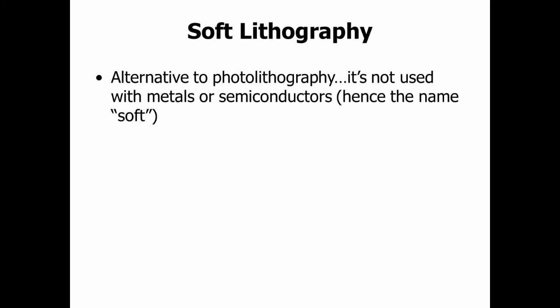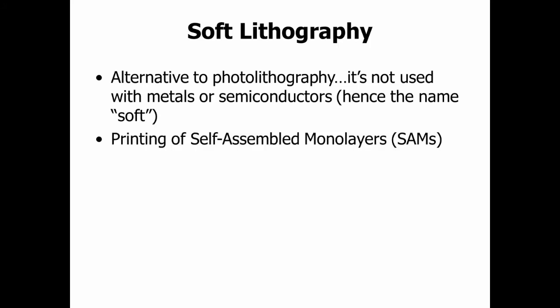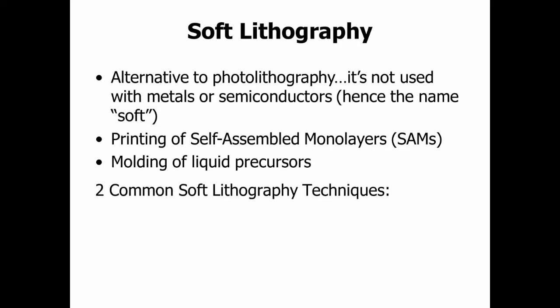Soft lithography is an alternative to photolithography — you don't use it with metals or semiconductors, hence the name 'soft.' You can use soft lithography to print self-assembled monolayers. It involves molding a liquid, kind of like making a stamp. There are two techniques: micro contact printing and nano imprint.